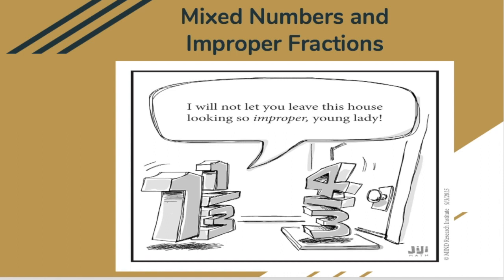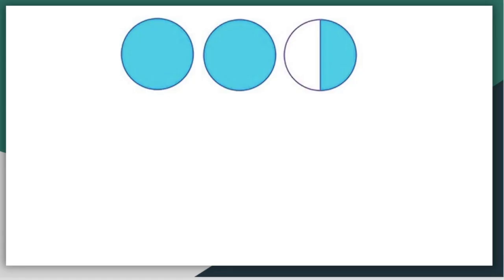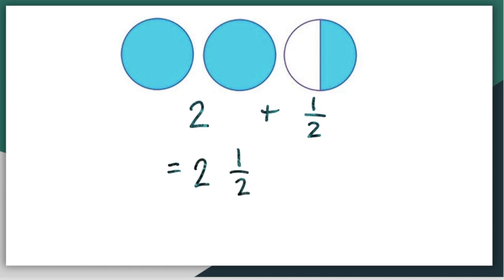We've learned in the past that improper fractions and mixed numbers are used to name fractions greater than one whole. Let's take a closer look at this pictorial representation. In this picture, there are two wholes and one half. Two plus one half is the same as two and a half. This is an example of a mixed number. In a mixed number, there's a whole number and a fractional part. The fractional part has to be a proper fraction, which means the numerator is smaller than the denominator. Otherwise, you would need to do renaming.